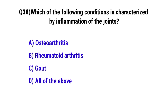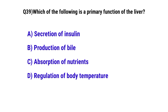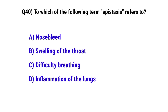Question No. 38: Which of the following condition is characterized by inflammation of the joints? The correct option is D: all of the above. Question No. 39: Which of the following is a primary function of the liver? The correct option is B: production of bile.